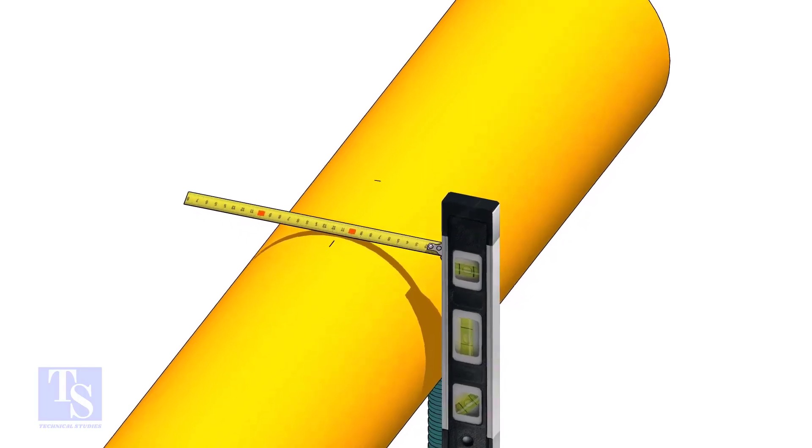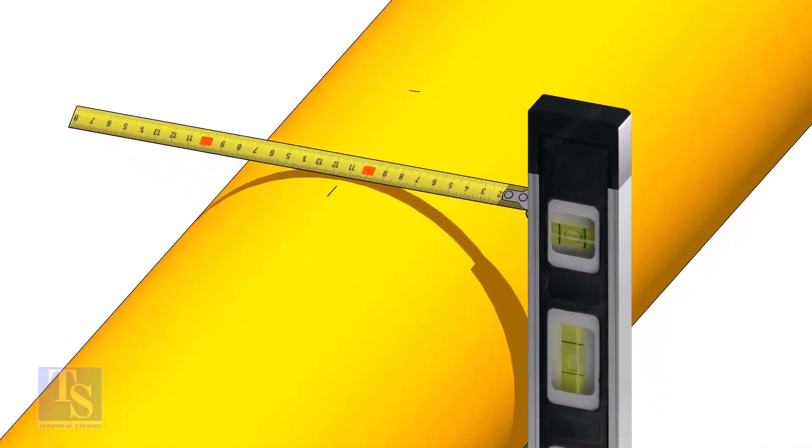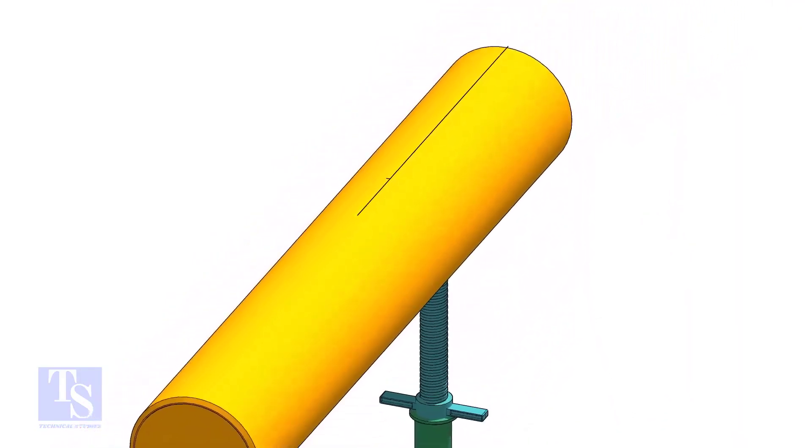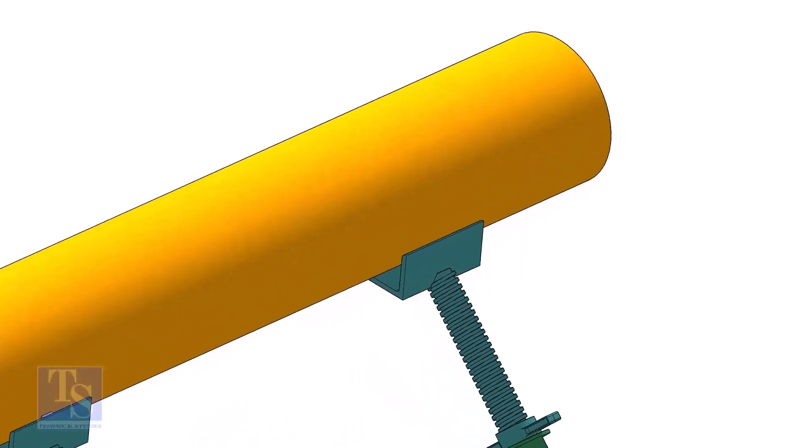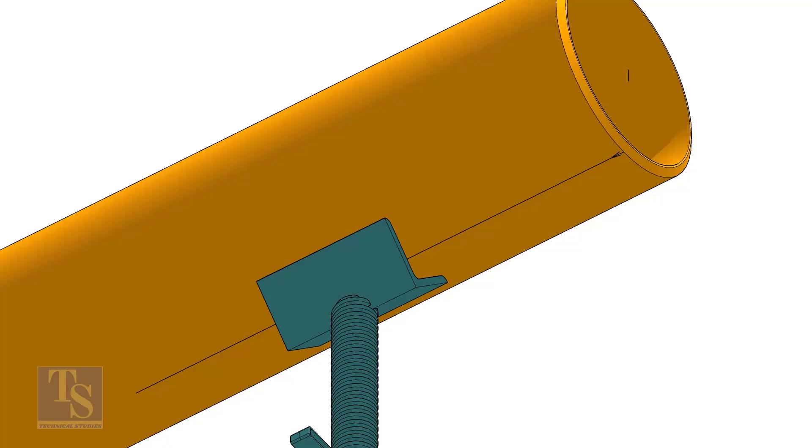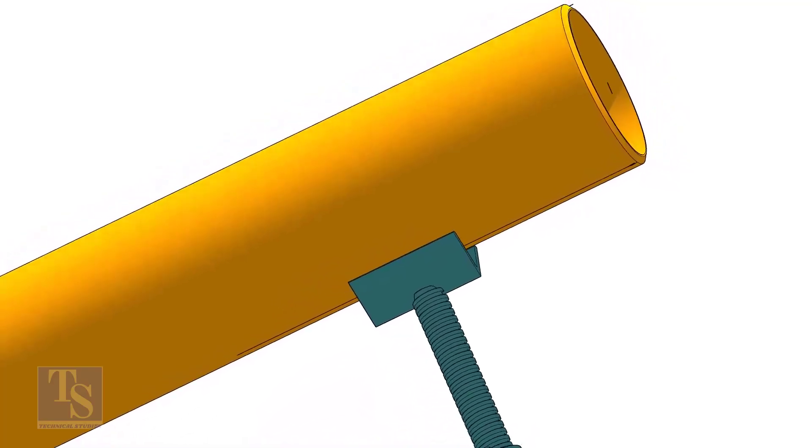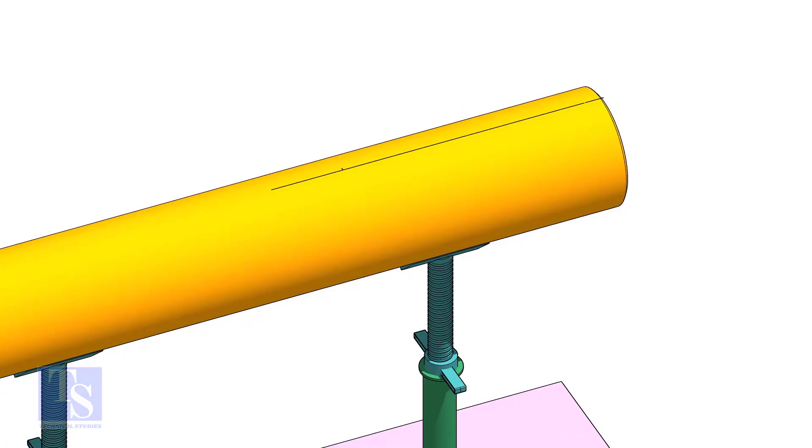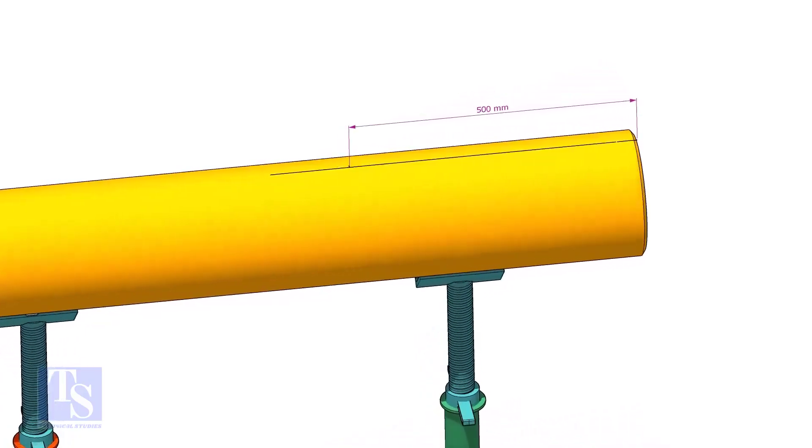Mark the center of the other end where you want the center line to be extended. Mark the center of the branch connection.